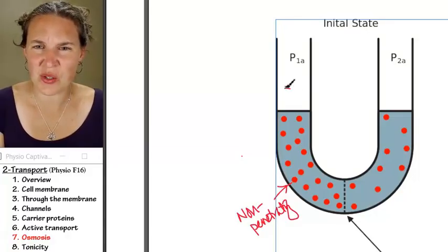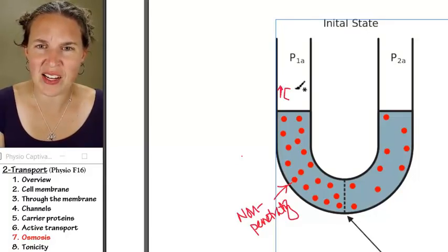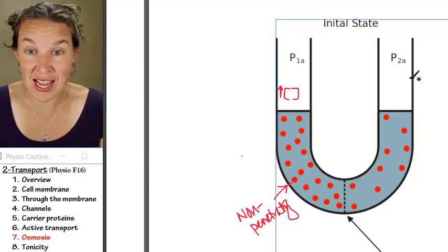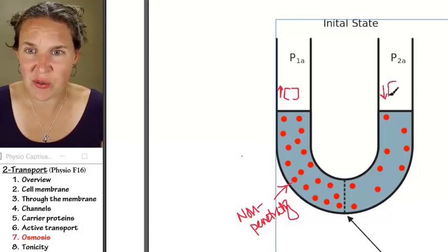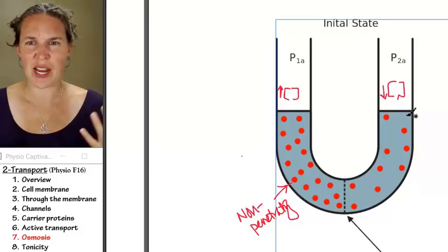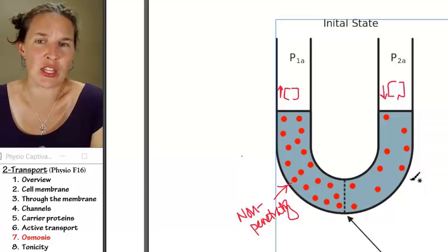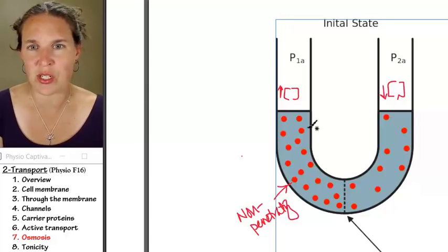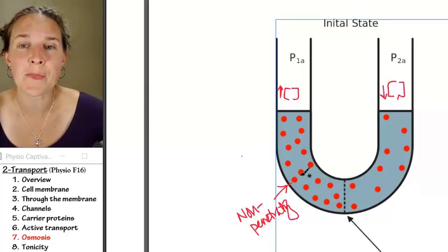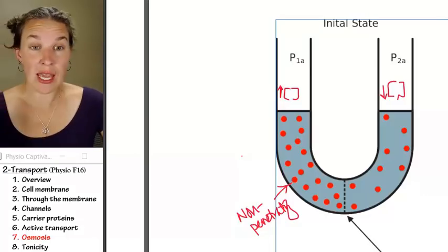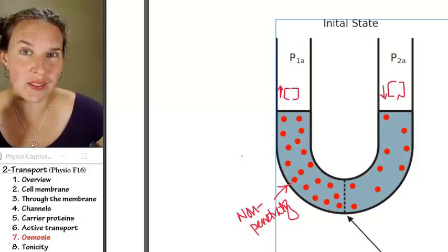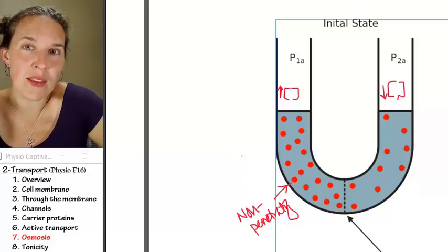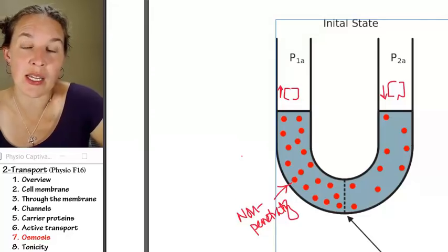No. This concentration is way higher. There's more particles per volume on this side than on this side. What's water going to do? Particles can't move. If the particles can move, they will. But the particles can't move. So now water is the only thing that can move if you want to reach osmotic equilibrium.